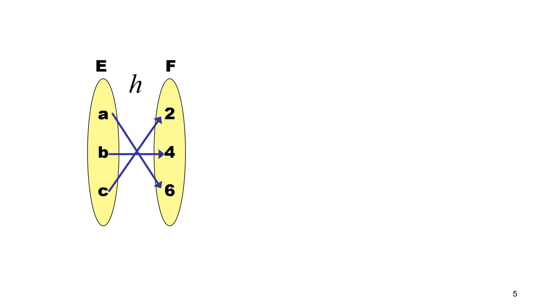Alright, we proceed to another example. In set E we have a, b, c. In set F we have 2, 4, 6. Each element of E mapped to each element of F.